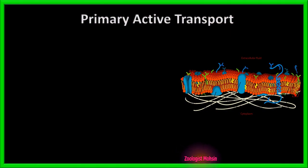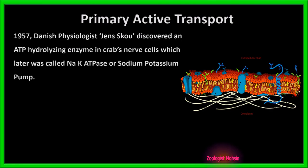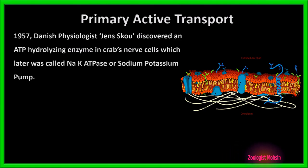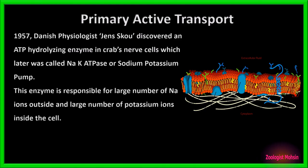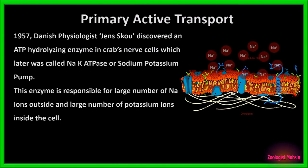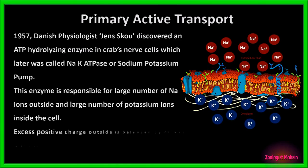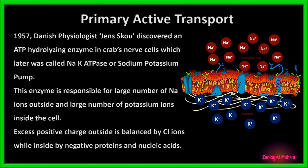Primary active transport. In 1957, a Danish physiologist Jenskow discovered an ATP-hydrolyzing enzyme in crab's nerve cells, which later was called the sodium-potassium ATPase, or sodium-potassium pump. This enzyme is responsible for maintaining a large number of sodium ions outside and a large number of potassium ions inside the cell. Excess positive charge outside is balanced by chloride ions, while inside by negative proteins and nucleic acids.